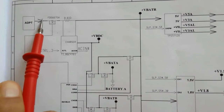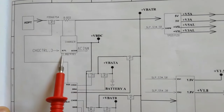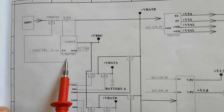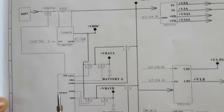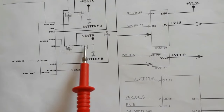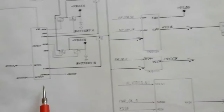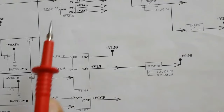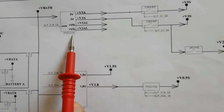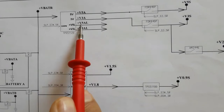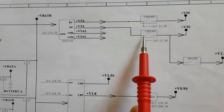Here we have the BQ24703, which is a charge IC. These components are MOSFETs. Here we have the TPS51120, which is the power management IC for the 3-volt and 5-volt always rails.